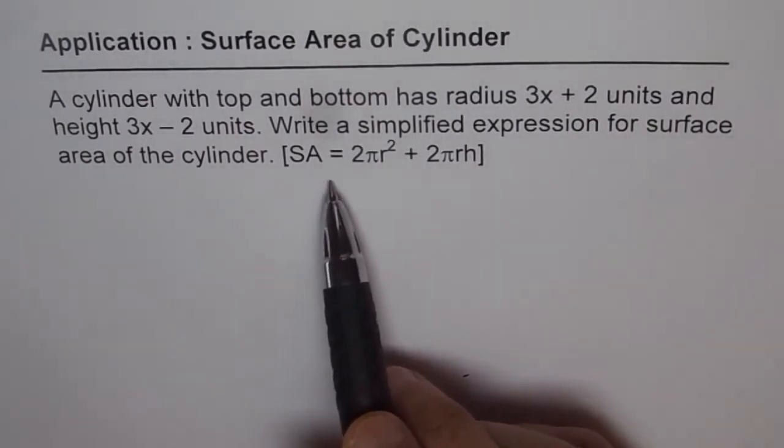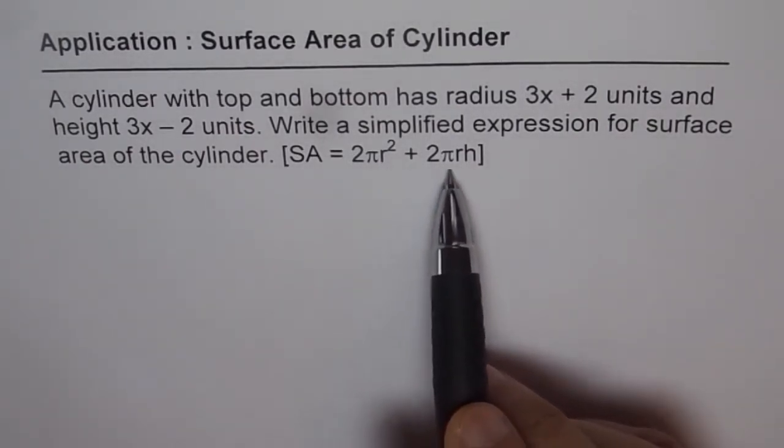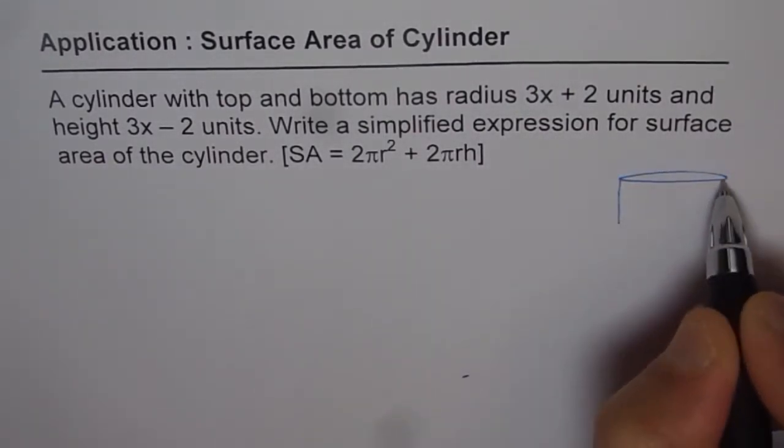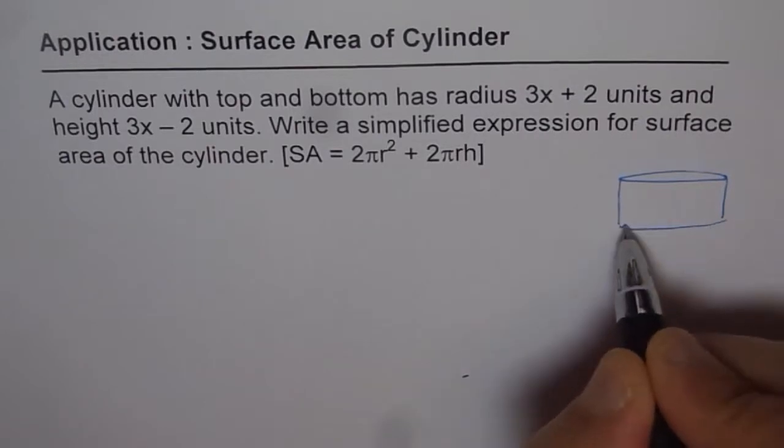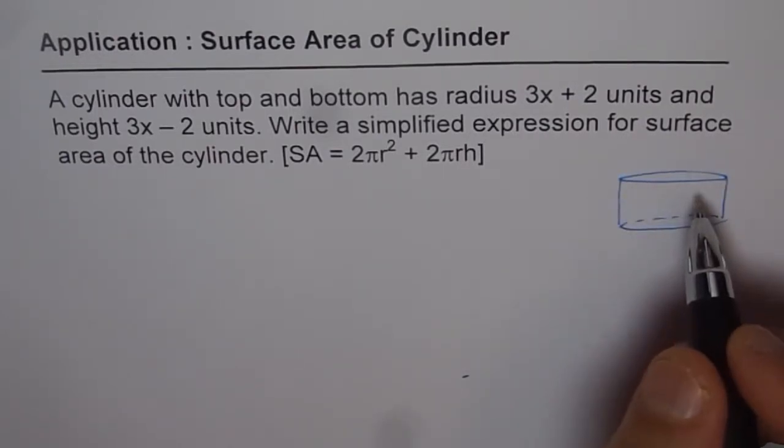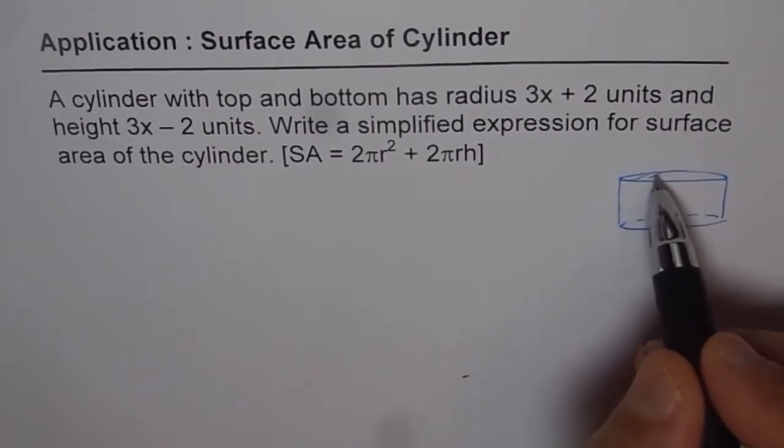The formula for surface area is 2 pi r square plus 2 pi r h. Let's first sketch one. So that is our cylinder. It has a circular base and circular top and both are there. So it is a covered cylinder.